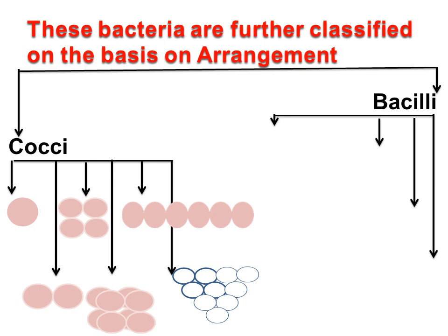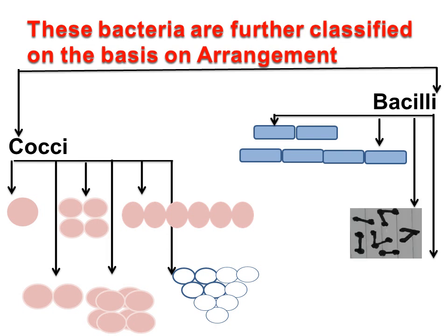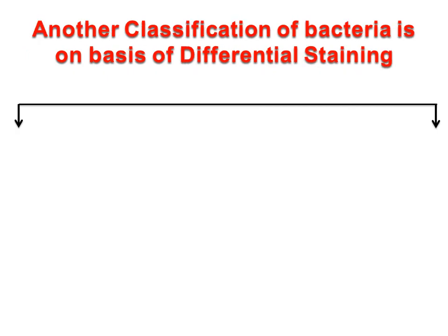Bacilli are classified further on the basis of arrangement as: Diplobacilli — arranged in pairs; Streptobacilli — bacilli arranged in chains; Corynebacterium — arranged at angles forming a Chinese letter pattern; Coccobacilli — a coccobacillus is a type of bacterium with a shape intermediate between cocci and bacilli, that is they have very short rods which may be mistaken for cocci.